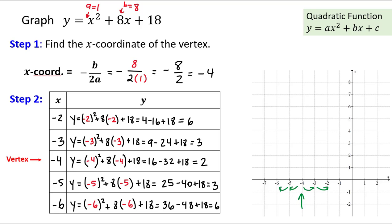Now with all y-coordinates found for the remaining four points, we can observe an important symmetry check: the two points closest to the vertex on each side should share the same y-coordinate, and the two outer points should also share the same y-coordinate. If you don't see this symmetry in your table, you've made a calculation error somewhere — including possibly in finding the x-coordinate of the vertex.